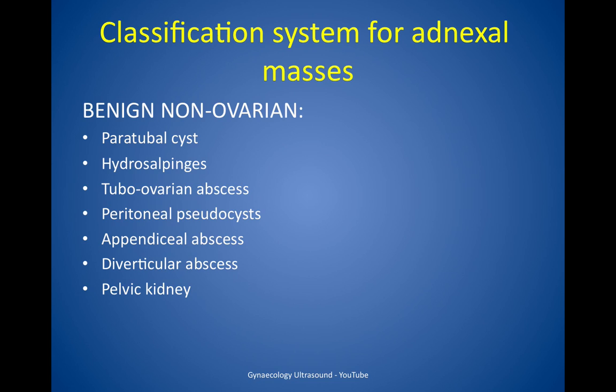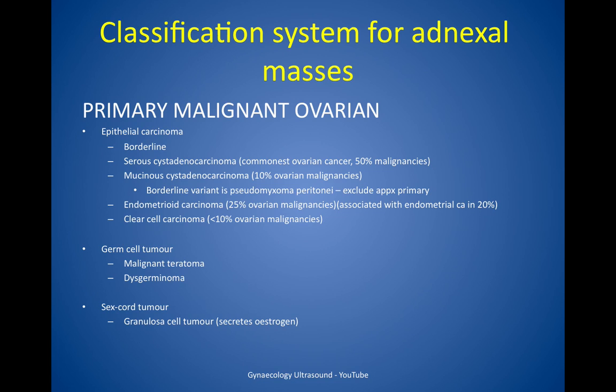In benign non-ovarian masses: paratubal cyst, hydrosalpinges, tubo-ovarian abscess, peritoneal pseudocysts, appendiceal abscess, diverticular abscess and pelvic kidney. Primary malignant ovarian lesions are in three categories: epithelial carcinoma, germ cell tumour and sex cord tumour.